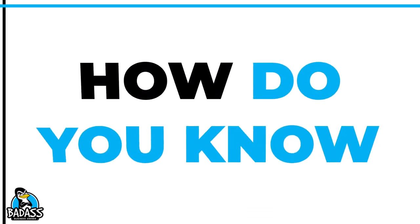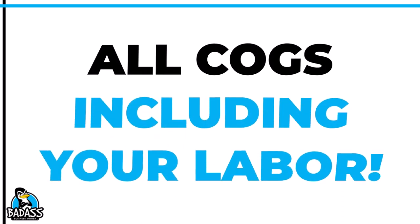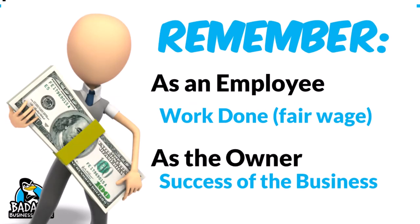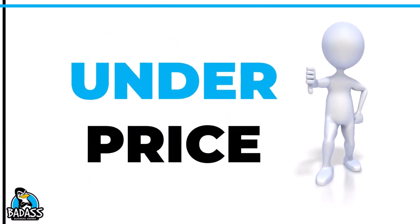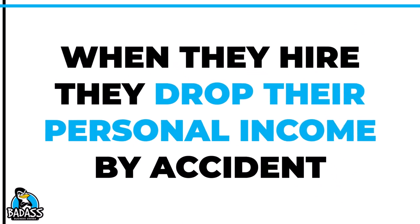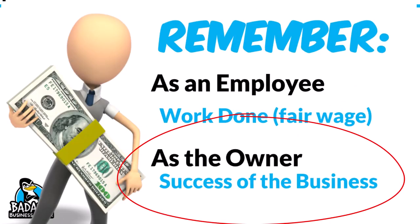How else will you know that you are priced correctly to cover the employee version of you? Your pricing needs to cover all of your costs of goods, including money you should be making doing the job. You wear two hats in your business: the employee you and the business owner you. The employee you gets paid in your cost of goods the majority of the time. The business owner you gets paid from your business profits. When a business owner fails to account for their employee time, they tend to underprice. Eventually, when they hire help, it drops their profit dramatically and unexpectedly.